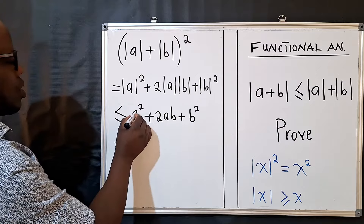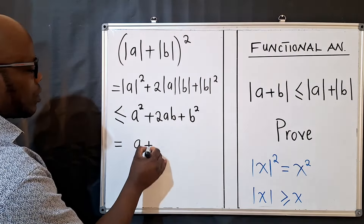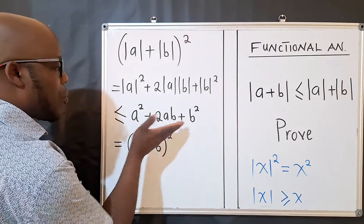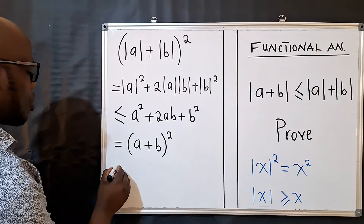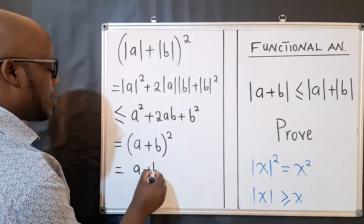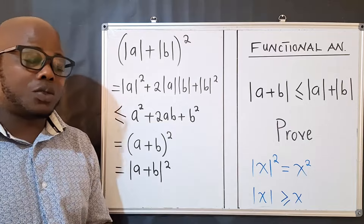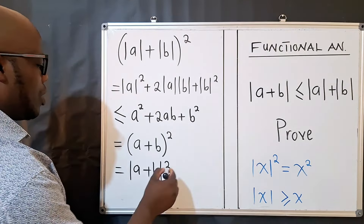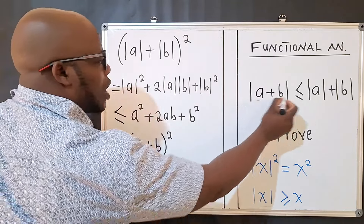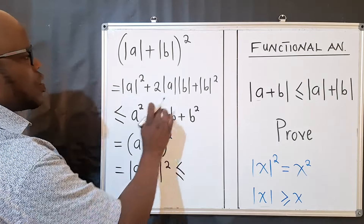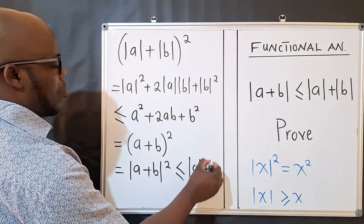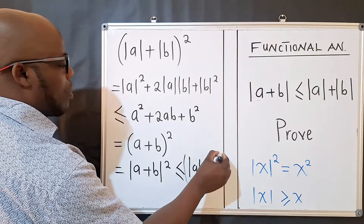The expression a² + 2ab + b² can be written as (a + b)². Using Property 1, (a + b)² equals |a + b|². So we now have (|a| + |b|)² ≤ |a + b|², which is less than or equal to what we started with — the right-hand side with a power of 2.